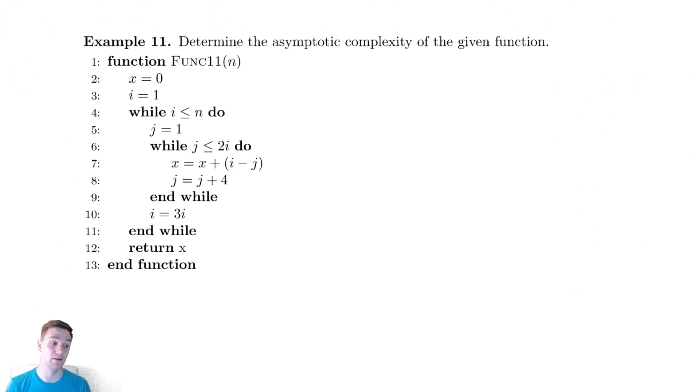For this example, we're going to embed a while loop inside of another while loop and see where that leads us. So we have a while loop on the inside there. All of the contents take constant time. So we need to create an iteration table and see what happens.